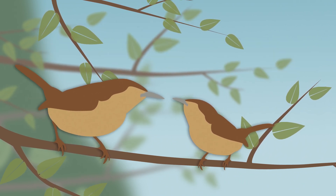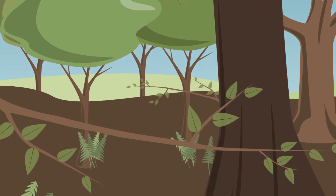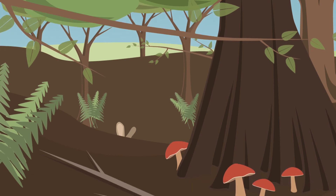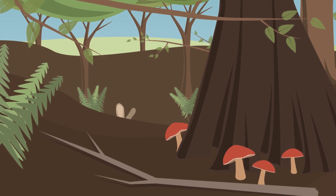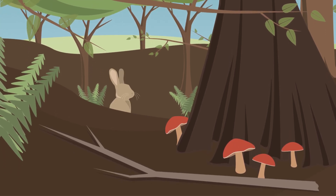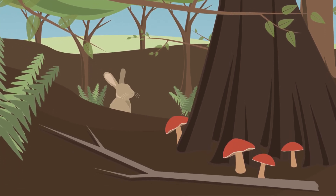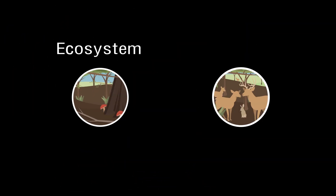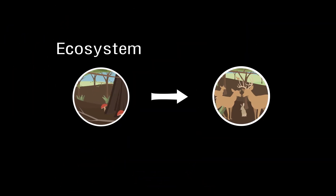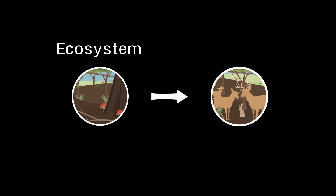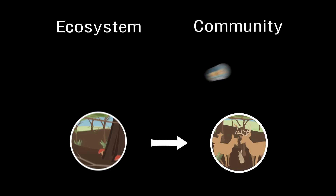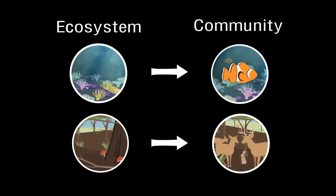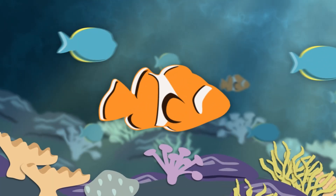All of the various organisms inhabiting a particular ecosystem are termed a biological community. The biological community in the deciduous forest ecosystem includes many types of trees and other plants, animals, various mushrooms, and other fungi. Each ecosystem is filled with a unique biological community.